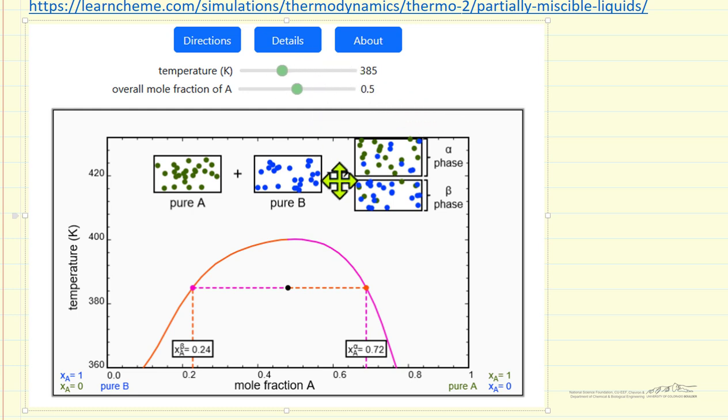We can change the location of this black dot by moving the slider for temperature or moving the slider for mole fraction. So let's look at this simulation.